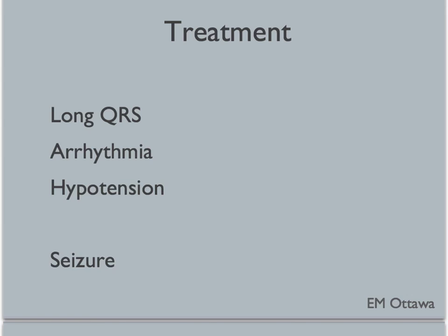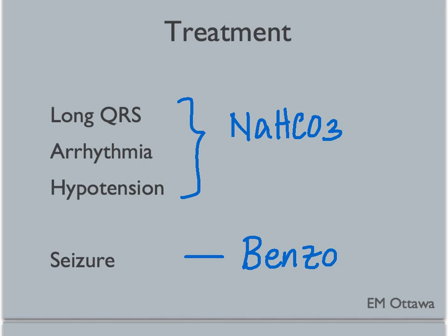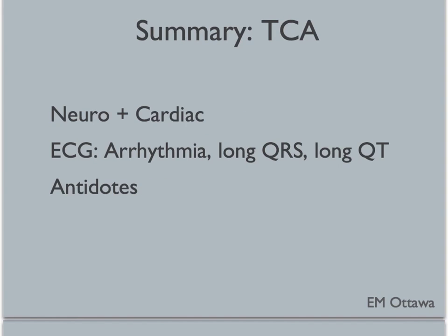In patients who have a long QRS interval, arrhythmia, or hypotension after fluids, we give sodium bicarb. If the patient is seizing, benzodiazepines such as lorazepam or diazepam will be used. To summarize, TCA acts on the neurological and cardiovascular systems. We do an ECG to look for arrhythmia, prolonged QRS interval, and prolonged QT.